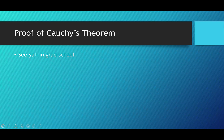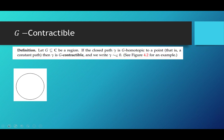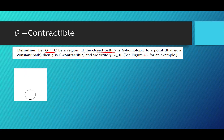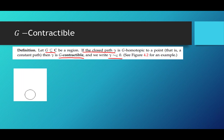The proof of Cauchy's Theorem is well beyond the scope of this course. If you go to grad school and take a complex analysis course, you'll definitely see it. Your book does give a proof assuming certain things, but we're just going to treat Cauchy's Theorem as true. We'll close this section with contractibility. Let G be a region and let gamma be a closed path that's G-homotopic to a point.